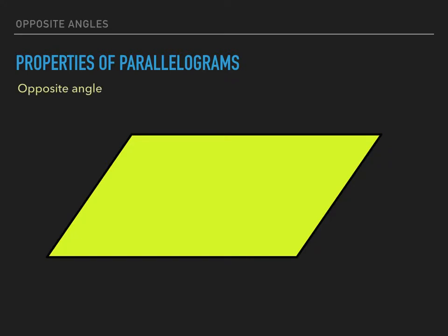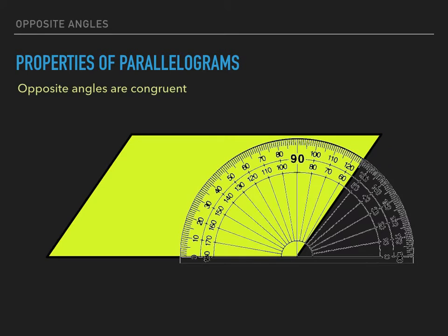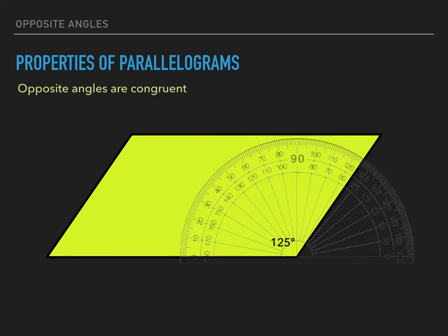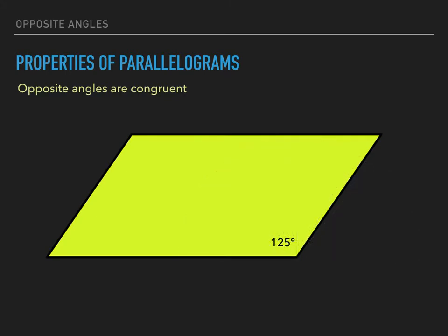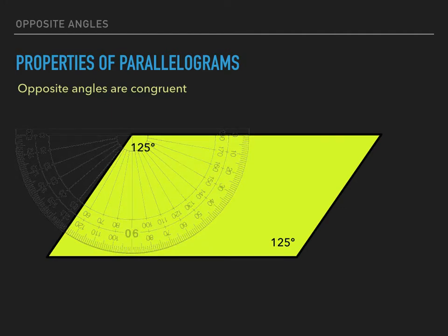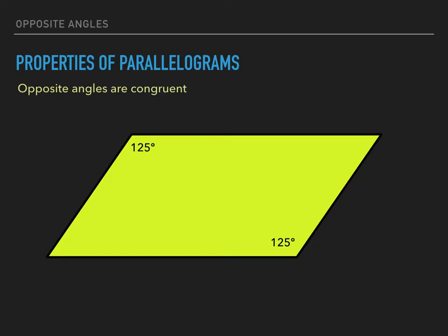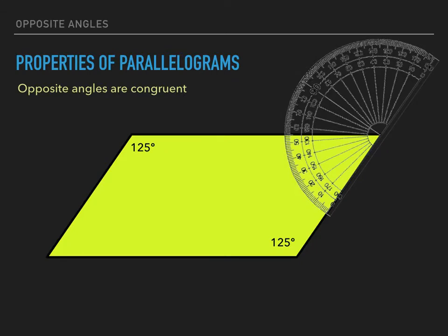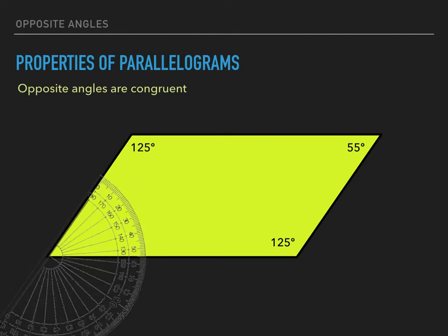The first property is that opposite angles are congruent. We can measure each angle. This obtuse angle measures 125 degrees and the angle opposite it also measures 125 degrees. Now let's measure the acute angles. This one is 55 degrees and the angle opposite it is also 55 degrees. So we've verified that property.